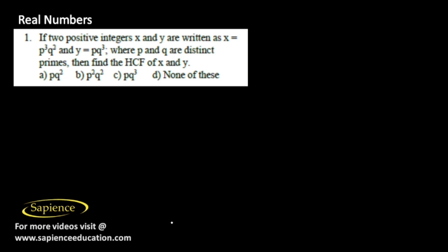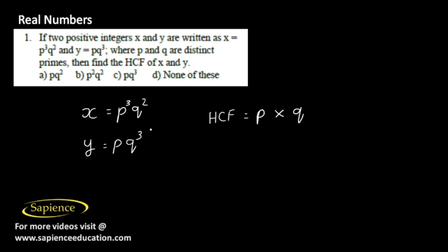Solutions for the real number test. First question: two positive integers x and y are written as x equals p cubed q squared and y equals p q cubed, where p and q are distinct primes. Find HCF of x and y. Using prime factorization, HCF is p into q. For p the lowest power is 1, and for q we choose 2. So HCF equals p q squared. Option A is the correct answer.